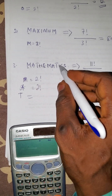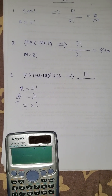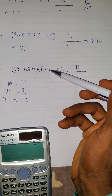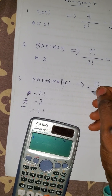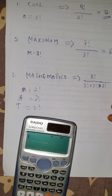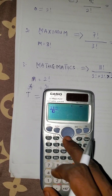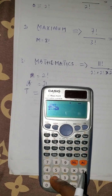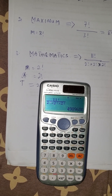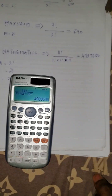T also appears two times, two factorial. Letters H, E, I, C, S each appear once, so we cannot include them. So we have eleven factorial over two factorial multiplied by two factorial multiplied by two factorial. Pressing this on the calculator: 11! / (2! × 2! × 2!) — the answer is 4,989,600. That is the number of ways the word MATHEMATICS can be arranged.